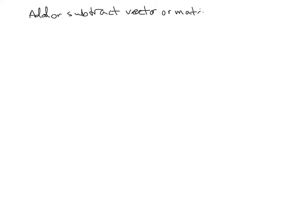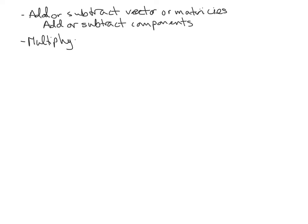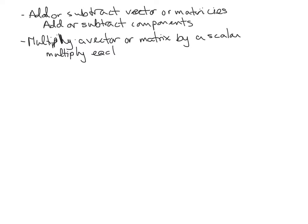The other special matrix is the zero matrix. Adding or subtracting matrices is pretty intuitive: you add or subtract the corresponding components. Similarly, if you multiply a vector or matrix by a scalar — just some number out in front — you multiply each component by that scalar.